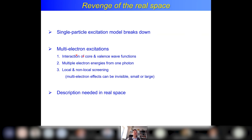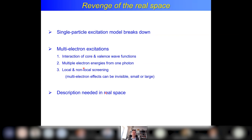All these things are essentially multi-electron excitations. Because they are multi-electron excitations, you cannot capture them in time-dependent DFT or similar codes because those are single-electron excitation schemes. The multi-electron phenomena are: the interaction of core and valence wave functions — called the multiplet effect; the fact that one photon can create electrons with different energies, requiring calculation of all of them; and screening, which can be local or non-local. These will be invisible if you have only s and p electrons, and large if you have d and f electrons.